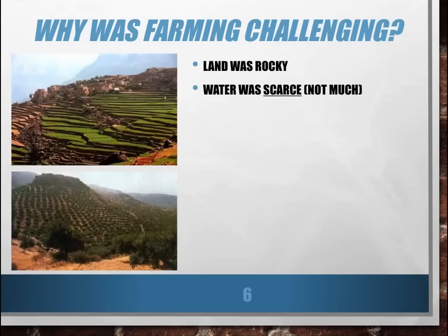Water was scarce — and scarce means there's not very much of it; it's an antonym for abundant. There was not a lot of water in Greece. In terms of its climate, if you've ever been to Southern California, it's very similar: maybe three or four months of rain per year, with the rest being very warm, hot, and dry. Things get pretty dry right before the rainy season kicks in, and if the rainy season doesn't come at all, droughts can be pretty severe.